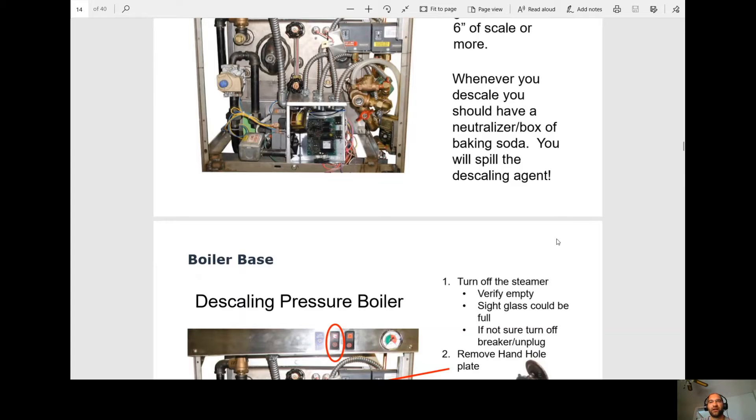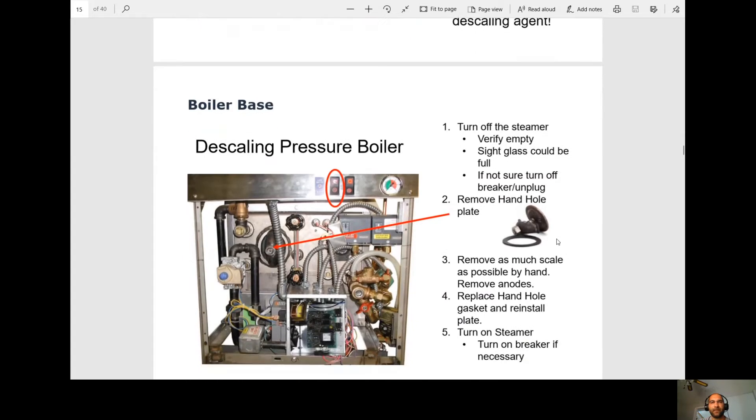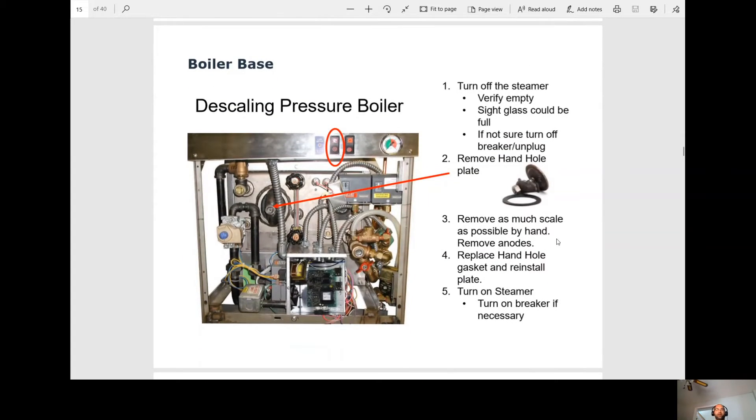Whenever you descale, you should have a neutralizer or a box of baking soda just in case you spill the descaling agent. So for a boiler base, for descaling, these are the steps. First thing, turn off the steamer. Verify it's empty. This sight glass here, it could be full because when we turn the switch off, we go down into our blowdown. Usually, it's up to three minutes, that blowdown. If it's slow to drain, this sight glass is actually going to fill up because when we go in our blowdown, we're introducing water in there so we can move any scale, push any scale off every time we turn the unit off.